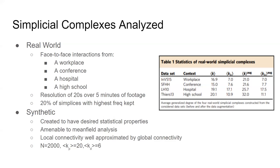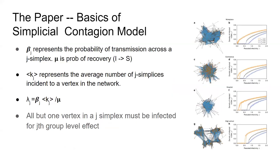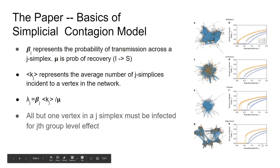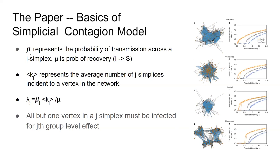The real-world simplicial complexes came from a workplace, conference, hospital, and high school: video was analyzed every 20 seconds for face-to-face interactions over five minutes of footage, choosing the top 20% of simplices by frequency to minimize finite effects. Synthetic simplicial complexes were created with nice statistical properties for mean-field analysis, with 2,000 zero-simplices (people), average pairwise degree k_p = 20, and k_d = average number of triangles incident on every edge.